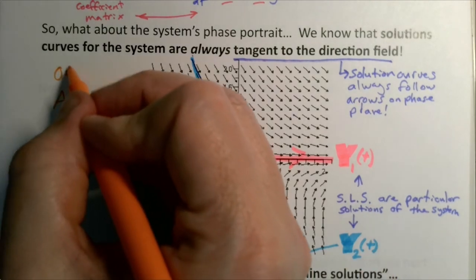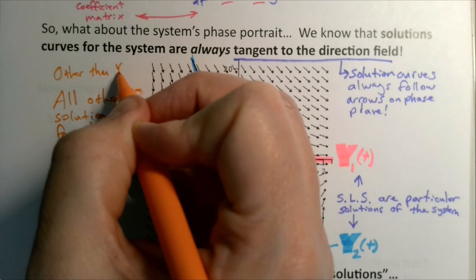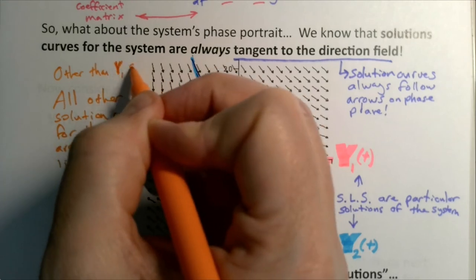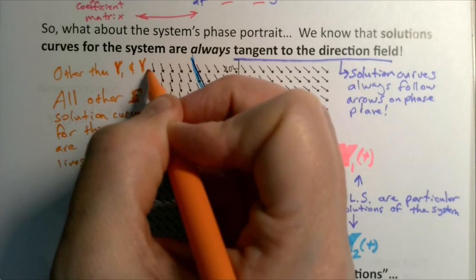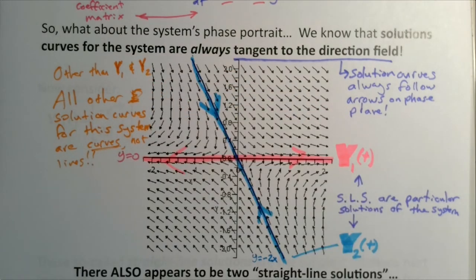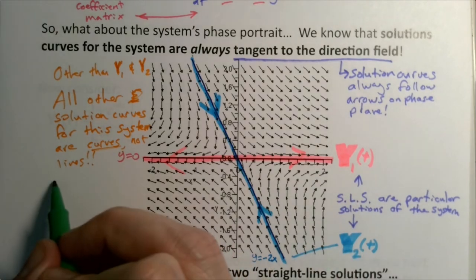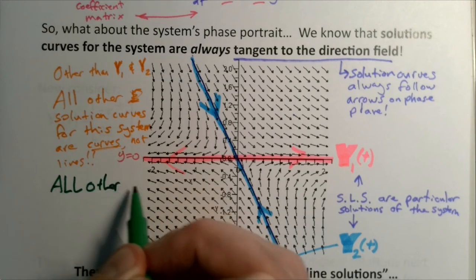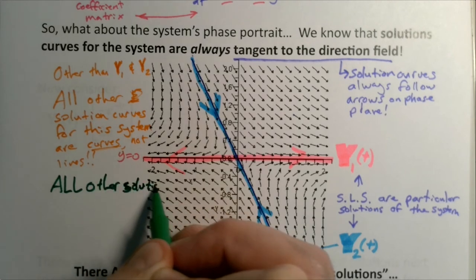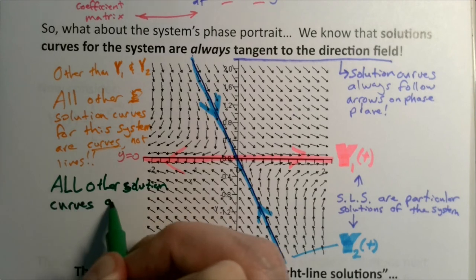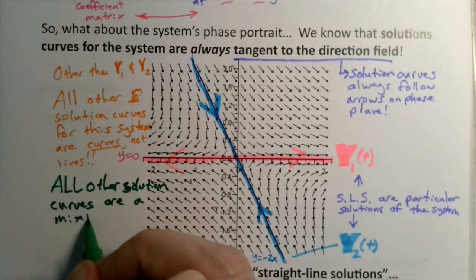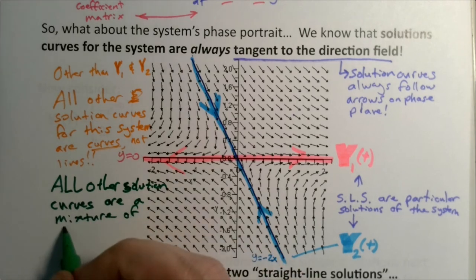The other thing to keep in mind, and that's kind of what I was suggesting over here, is that these two are particular solutions, but every other solution curve seems to be kind of a mixture of those two. All other solution curves are a mixture of y1 and y2.